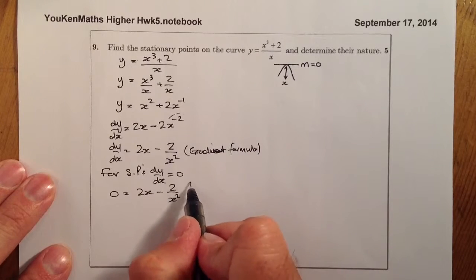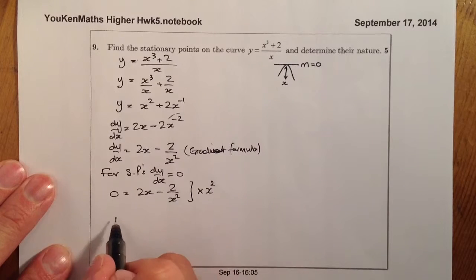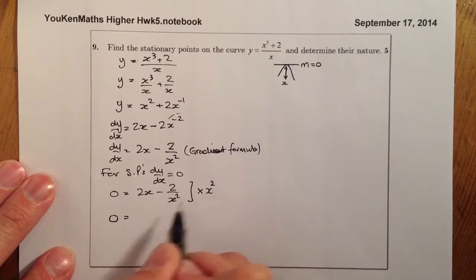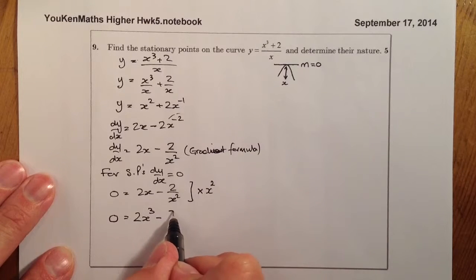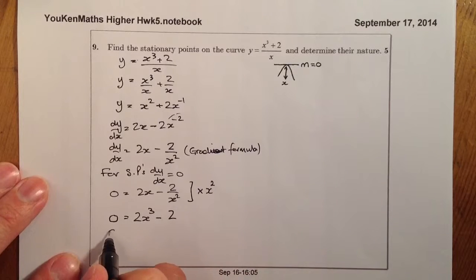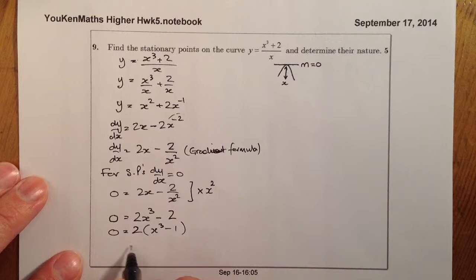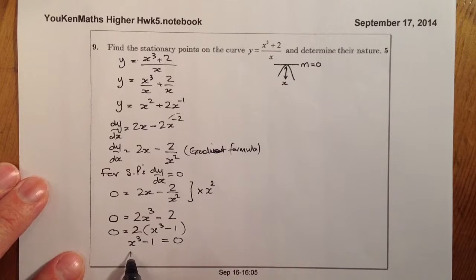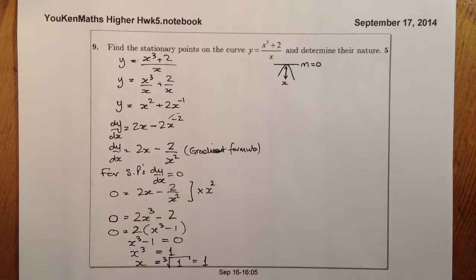To remove this fraction, I'm going to multiply everything by x squared, which will get rid of the fraction from the bottom. So 0 times x squared is still 0; 2x times x squared gives me 2x cubed; and multiplying the minus 2 over x squared by x squared, the x squared cancels, leaving minus 2. Taking out 2 as a common factor gives x cubed minus 1. Since 2 doesn't equal 0, x cubed minus 1 equals 0, so x cubed equals 1, meaning x equals the cubed root of 1, which equals 1.